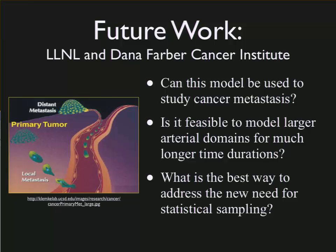To do this will require doing larger sections of the body than what we have been doing, for longer periods of time. And it's not a deterministic process, so we'll need to run many different simulations of these circulating tumor cells and then apply a statistical model on top to understand where we're likely going to see the sites occur. It's going to require a lot more development on the computational side, the physics side, and a lot of compute power.